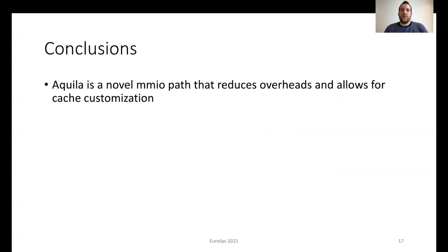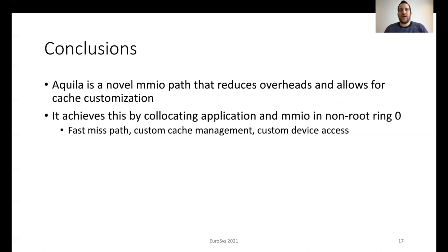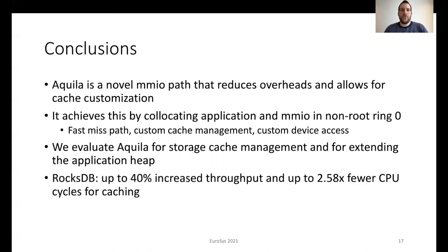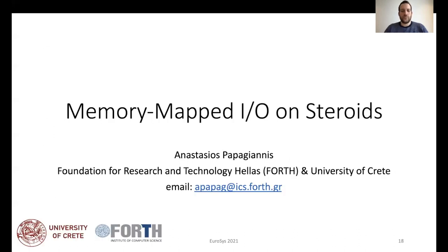To conclude, we propose Aquila, a novel memory-mapped I/O path that significantly reduces I/O overheads and provides customization based on application needs. Aquila collocates the application and memory-mapped I/O path in non-root ring 0, a high-privilege domain. This design enables a fast miss path and customization for both cache management and device access. We evaluate Aquila as a way to manage the storage cache and to provide heap extension over fast storage devices. With RocksDB, Aquila provides up to 40% increased throughput, coming from a reduction of up to 2.58 times in CPU cycles for cache management. With Ligra, Aquila results in up to 4 times reduction in execution time. Thank you for your attention — if you have any questions, you can reach me via Slack or email.